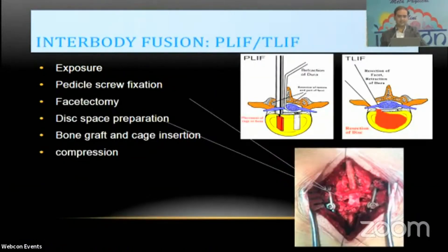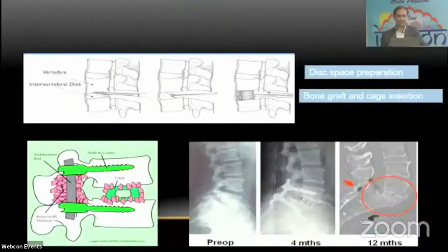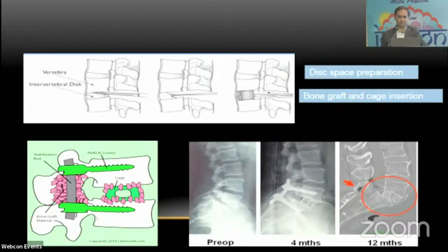For interbody fusion, the steps are: after exposure and pedicle screw fixation, perform decompression, nerve root release, and facetectomy. Disc space preparation requires a subtotal or near-complete discectomy and careful preparation of the end plates — this is the key to a good interbody fusion. Scrape properly with curettes, insert bone graft anteriorly in the disc space first, then insert the cage. Compress over the screws to achieve good bone contact. Postoperatively, in a year or so, a good fusion mass should be seen.